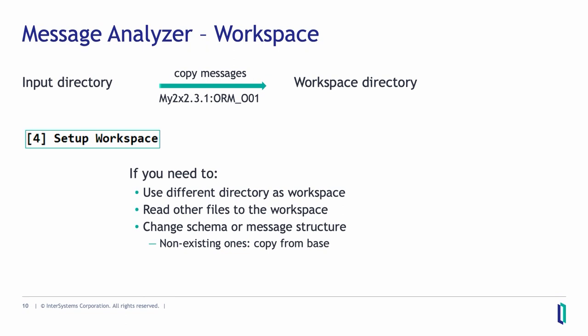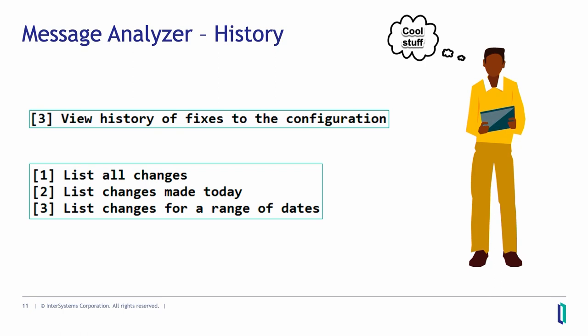It asks you only once how you want to name your new schema, which base schema to use, and which message type to run on — but at any time you can load new messages to the workspace. The message analyzer also shows you a history of what changes you made, so it can show you what kind of work it saved — what you would have done manually. Once you have your schema definitions set up, you're able to create a production that works on all these messages.